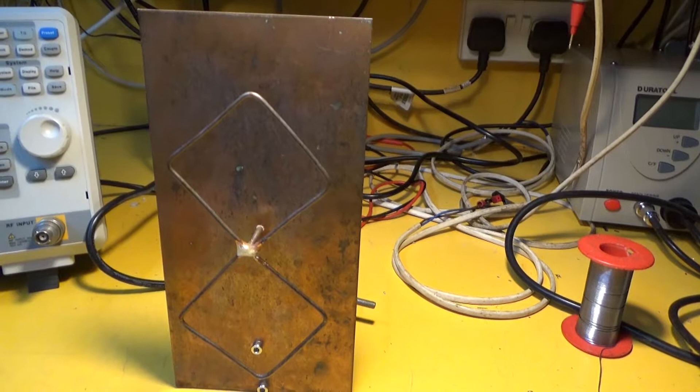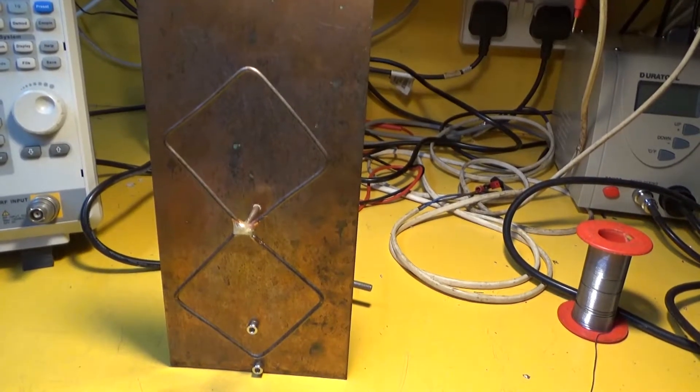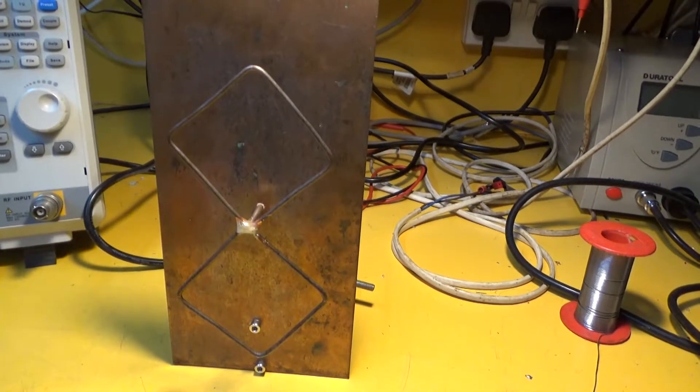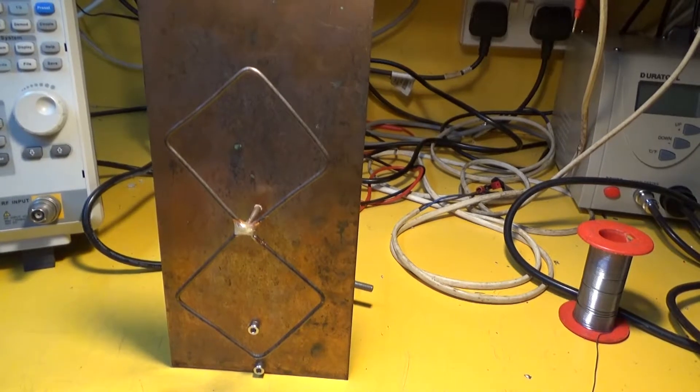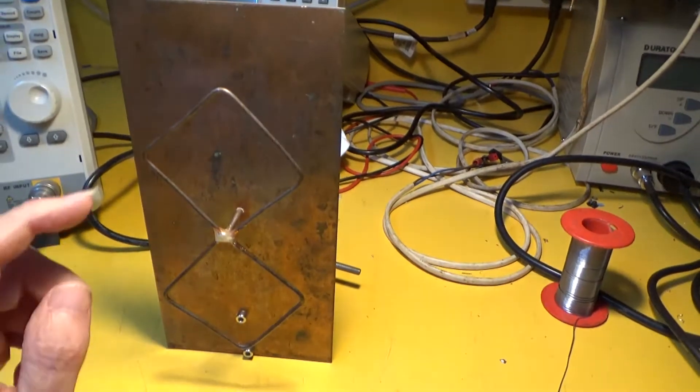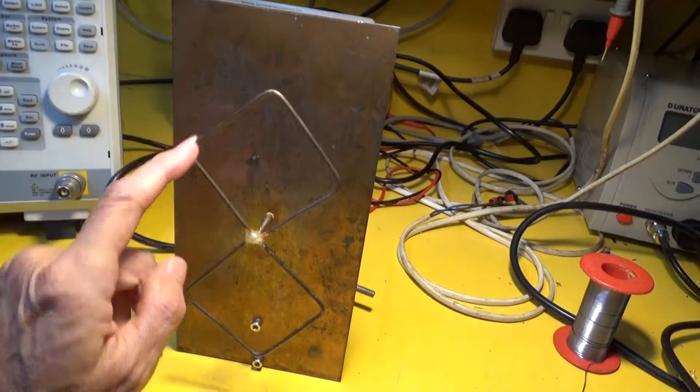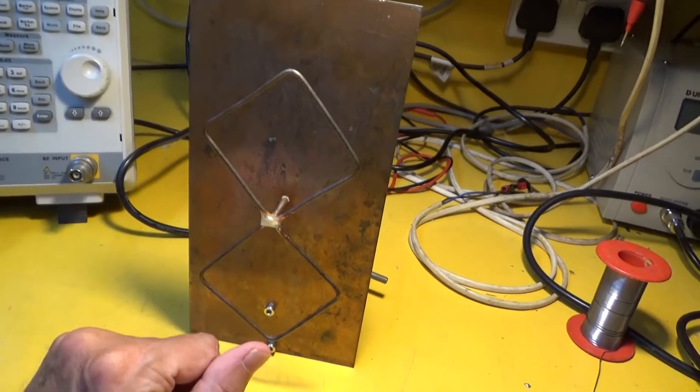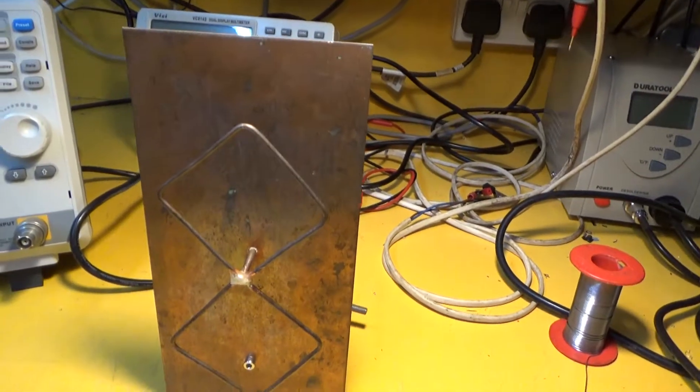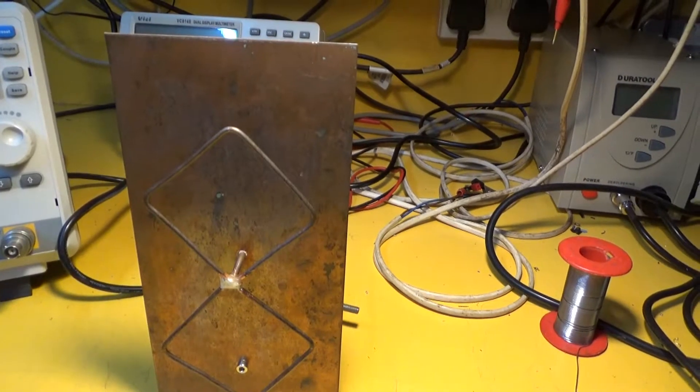But anyway I decided to build this aerial called the bi-quad. I've built these before, years ago I made one about 25 years ago for TV signals. This one is basically two quads, one above the other, that's one quad and one there, and they're joined in the middle.